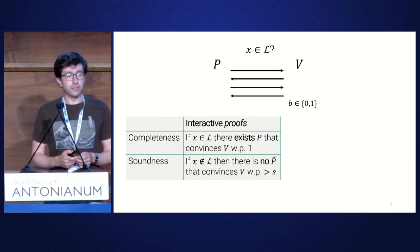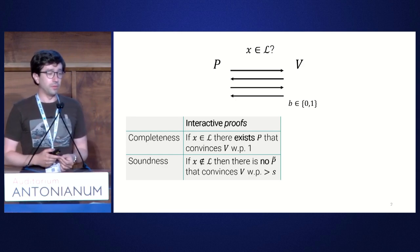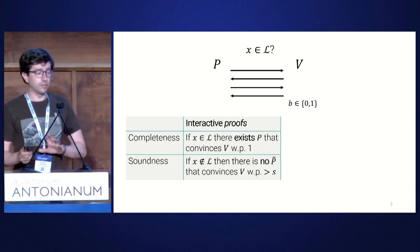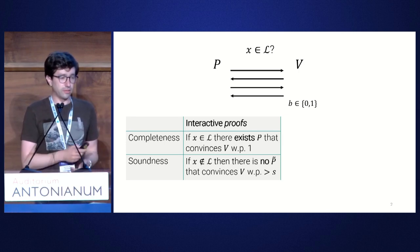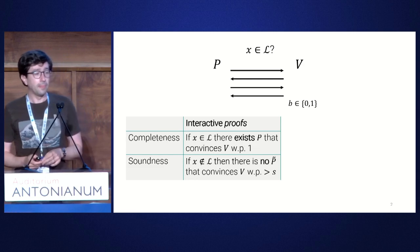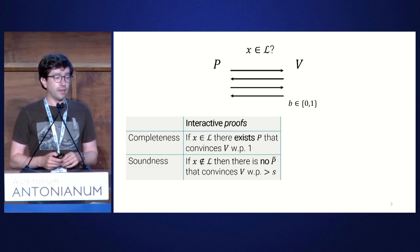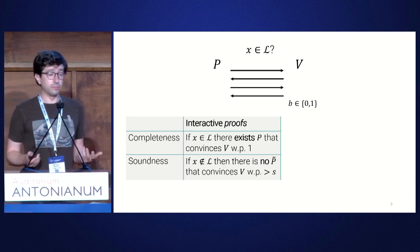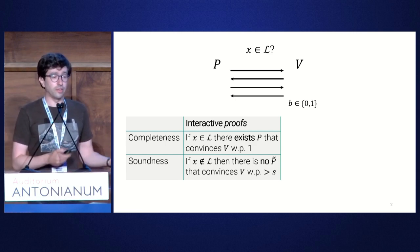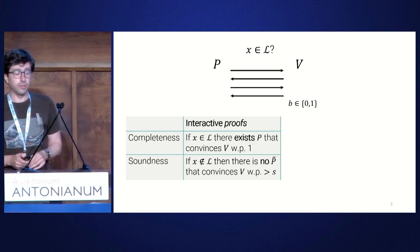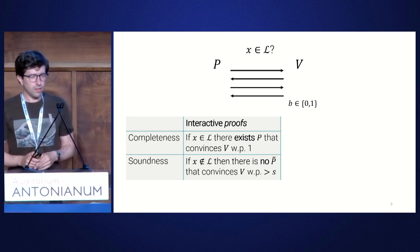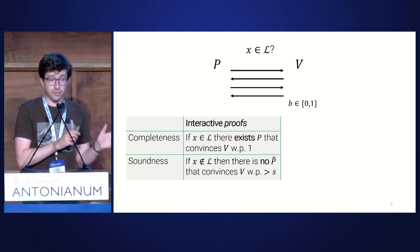You may be familiar with the notion of an interactive proof from complexity theory. It has two properties: completeness and soundness. If X is in L, then you can convince the verifier with probability one. If X is not in L, then no matter what the prover does, it cannot make the verifier output one with probability greater than S, where S is the soundness parameter.